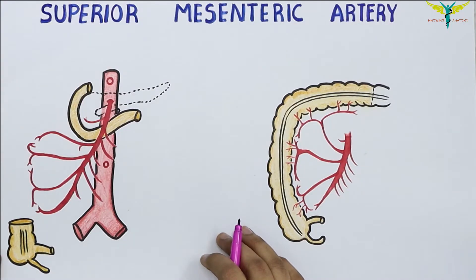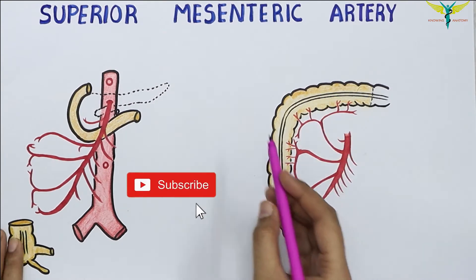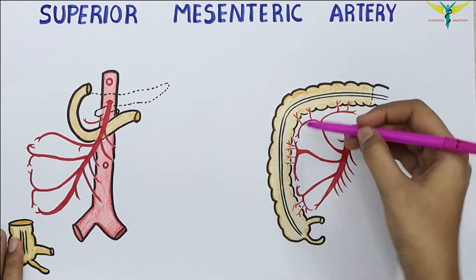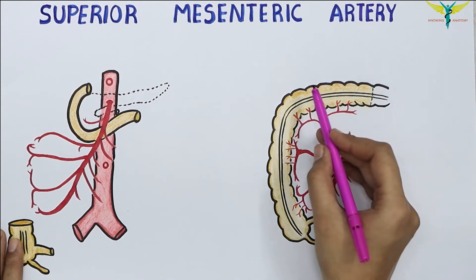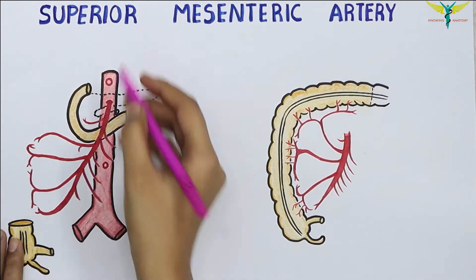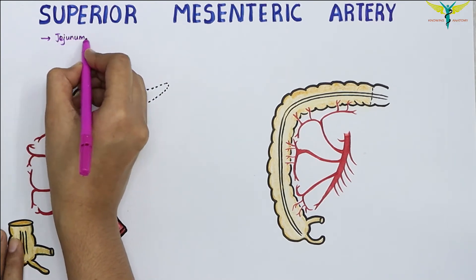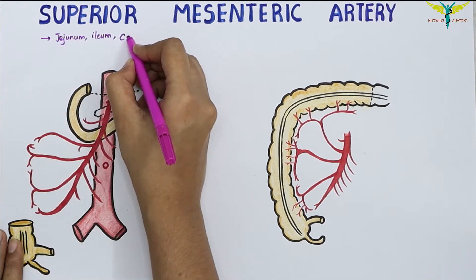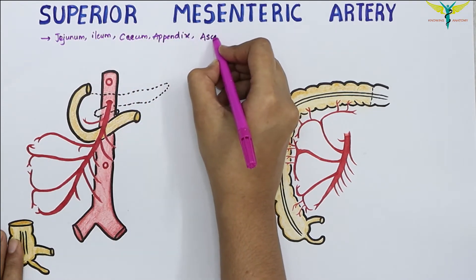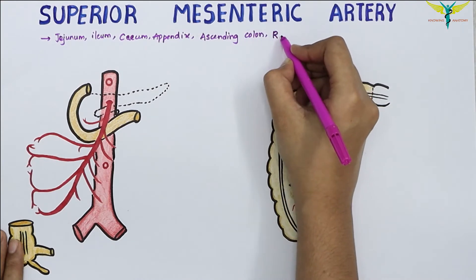In this video, let's learn about the superior mesenteric artery. The superior mesenteric artery mainly supplies the jejunum, ileum, cecum, appendix, the ascending colon, and up to the right two-thirds of the transverse colon.